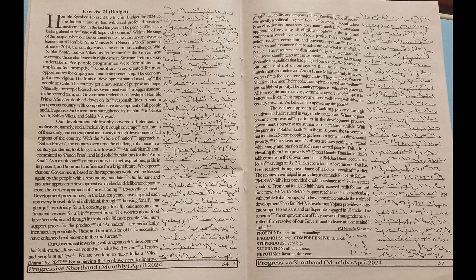As our Prime Minister firmly believes, we need to focus on four major castes. They are poor, women, youth and farmers. Their needs, their aspirations and their welfare are our highest priority. The country progresses when they progress. All four require and receive government support in their quest to better their lives. Their empowerment and well-being will drive the country forward.